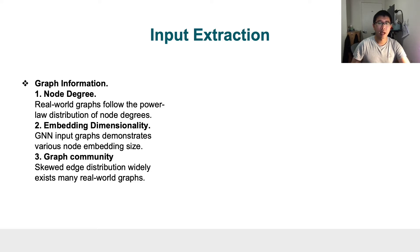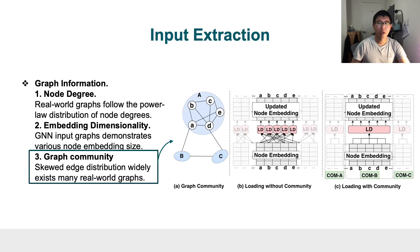The third point is graph community, which describes the patterns of skewed edge connectivity among nodes in a graph. Because in real-world graphs, some nodes are densely connected to each other while maintaining very sparse connections with remaining nodes. Leveraging graph community, we can explore data locality during GNN computation. One example is shown on the right-hand side, where we can effectively reduce unnecessary data loading of shared neighbors.